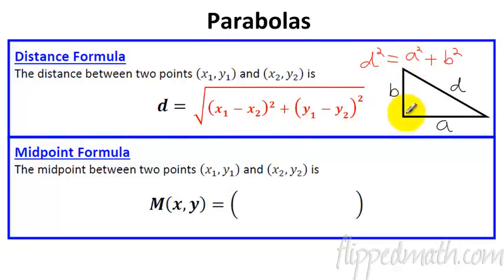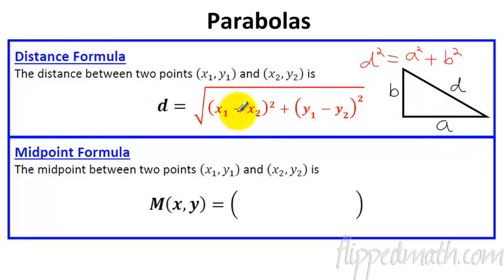It's the difference between the x's and then the difference between the y's. It's really just the Pythagorean theorem - we'll solve for d.